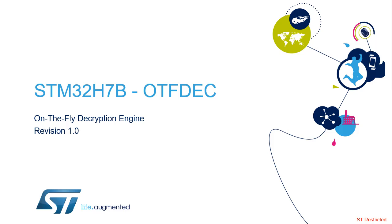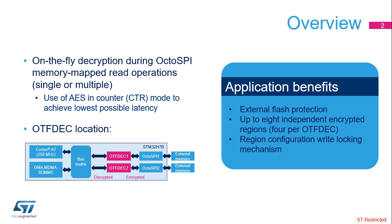Hello, and welcome to this presentation of the OTF-DEC, which is included in STM32H7B microcontrollers. The original purpose of OTF-DEC is to protect the confidentiality of read-only firmware libraries stored in external SPI NOR flash devices. The OTF-DEC performs on-the-fly decryption during OctoSPI memory-mapped read operations.